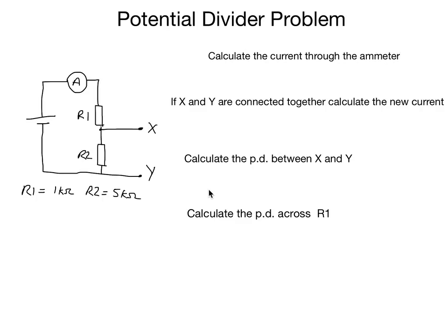Hello and welcome to this video about a simple potential divider problem. As you can see, there are two resistors, a 1kΩ and a 5kΩ connected, and X and Y are the two connections coming from this potential divider. The PD or EMF of the battery is 6 volts.